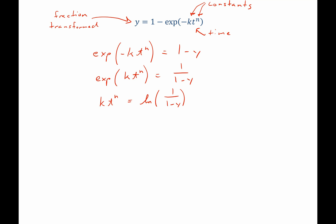Let's take the natural log one more time to bring down this n as an exponent. Now we have natural log of k plus n times the natural log of t equals the natural log of the natural log of 1 over the quantity of 1 minus y.